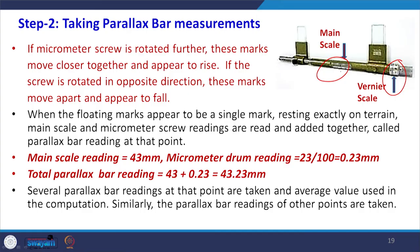We read the main scale reading and the micrometer drum reading and add them together. For example, 43 mm is the main scale reading and the micrometer drum reads 23 out of 100 graduations, so this becomes 0.23 mm added together, giving a parallax bar reading of 43.23 mm at that particular point.